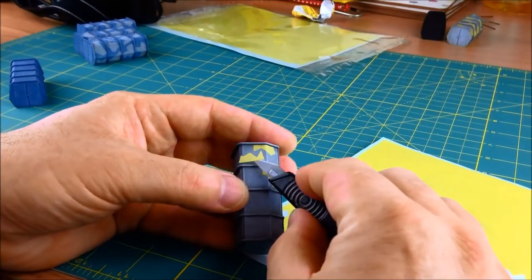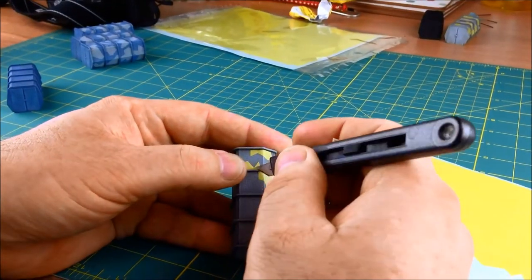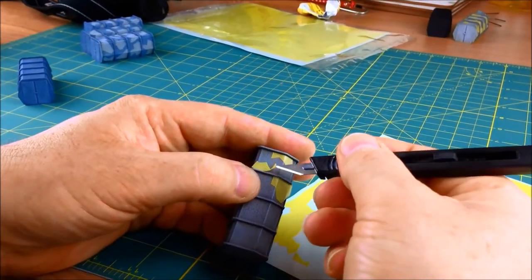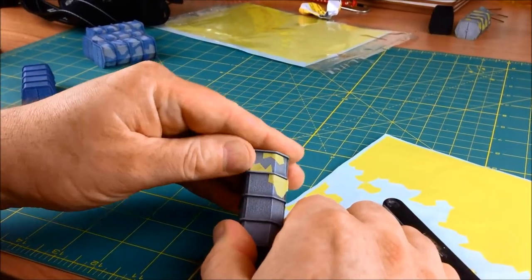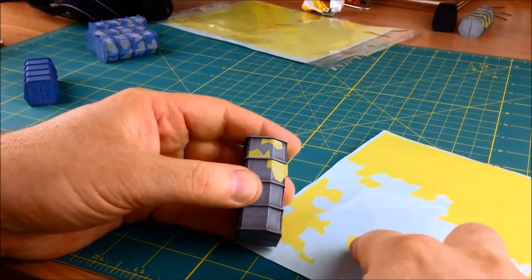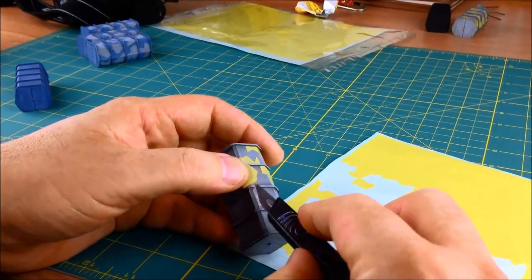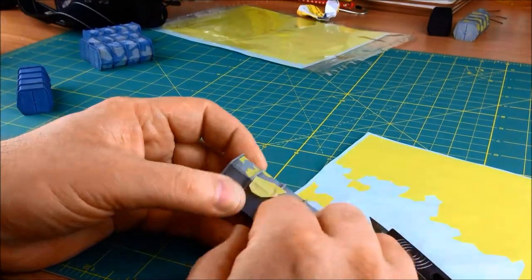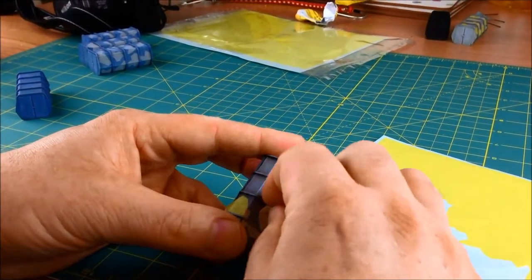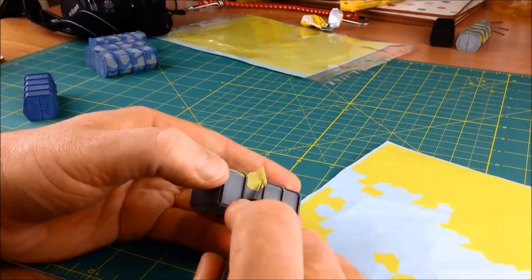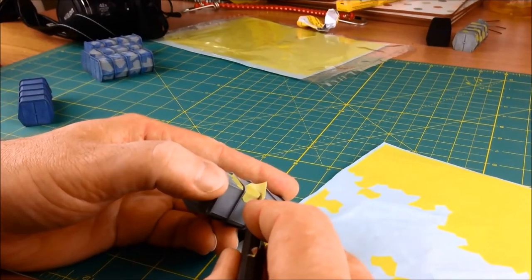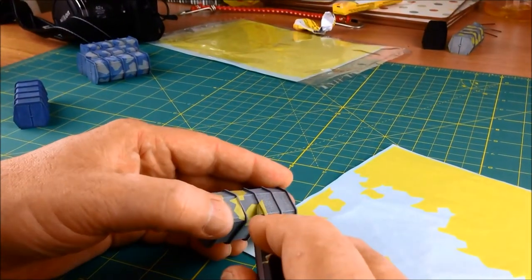Once this is all thoroughly dry, the application of the splinter mask effects can begin. Dale is just using a scalpel to lift the individual pieces of MaskFX from the sheet and applying them to the model. As you can see here, Dale is just rubbing down the MaskFX with his fingertips just to ensure it is adhered to the miniature.